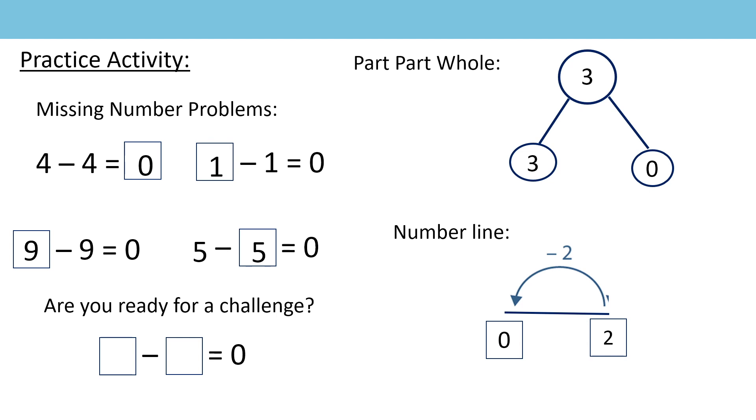Let's have a look at the challenge. What numbers did you put here? You could have chosen any numbers, so long as they were both the same. It could have been eight subtract eight equals zero. It could have been one subtract one equals zero. It could have been 25 subtract 25 equals zero. There are many possibilities. I wonder how many you found?